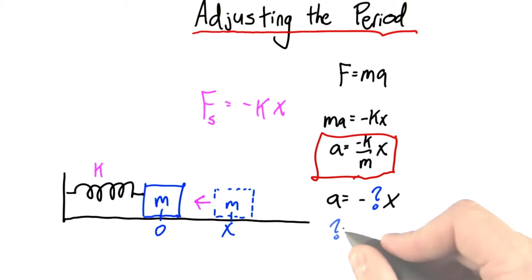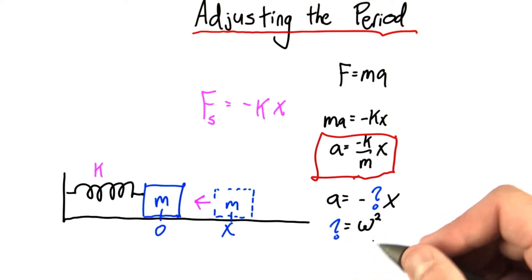Well, it turns out that this something is always equal to omega squared. And remember, omega is our radians per second, our angular frequency.